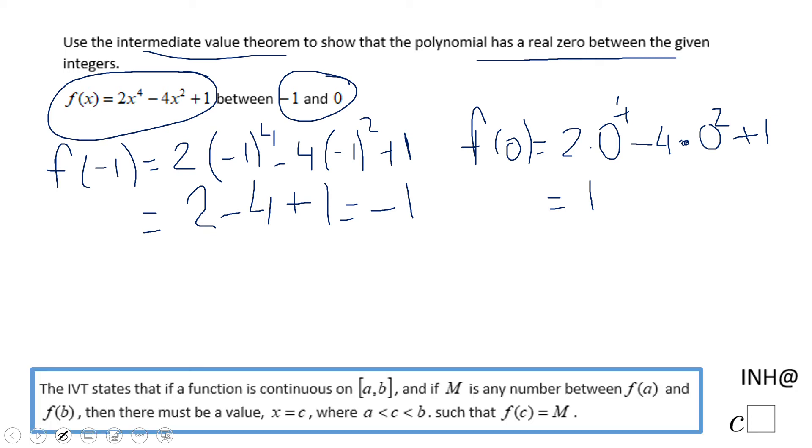So based on the IVT, which you see here—the Intermediate Value Theorem—we know that this function has a zero. Why?